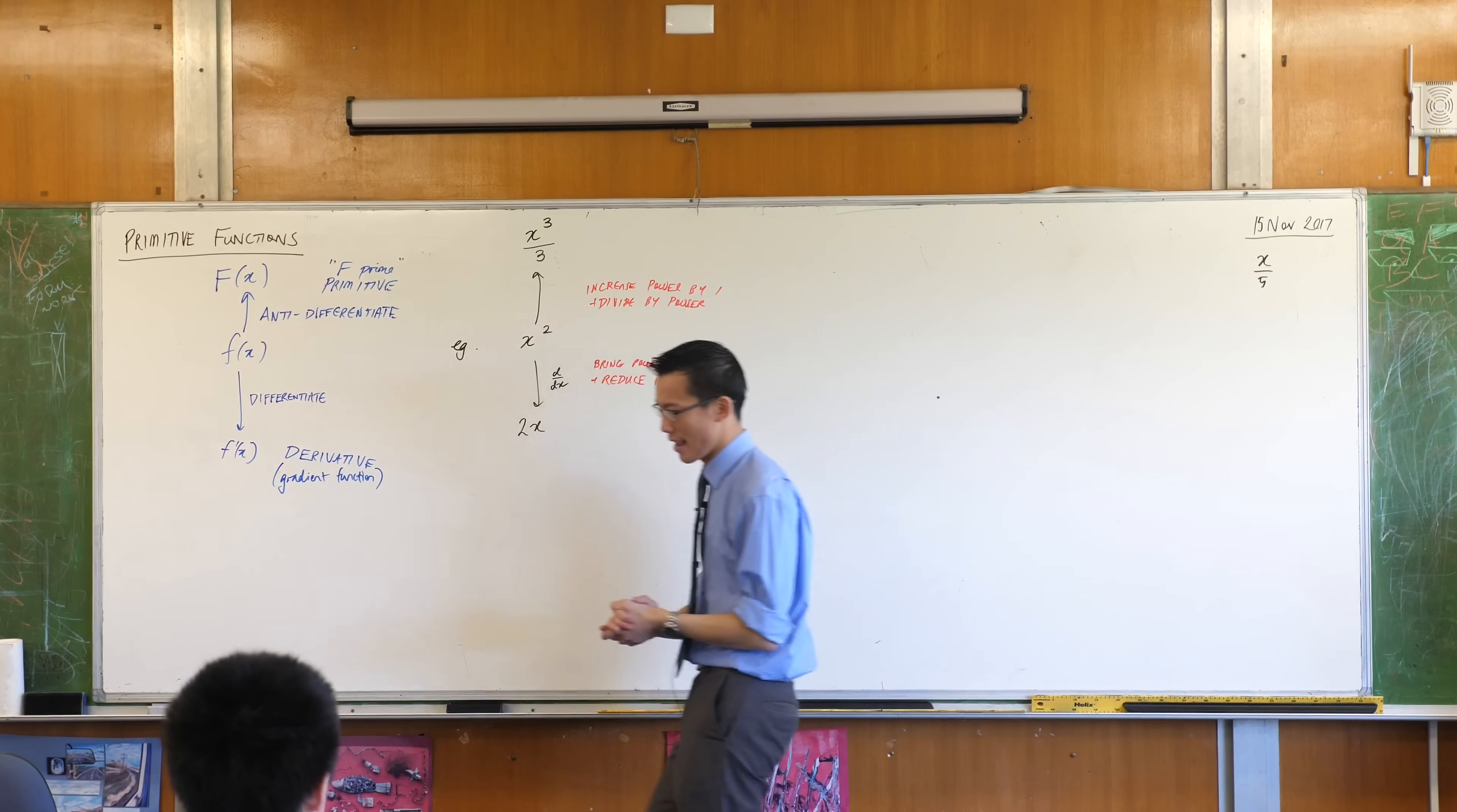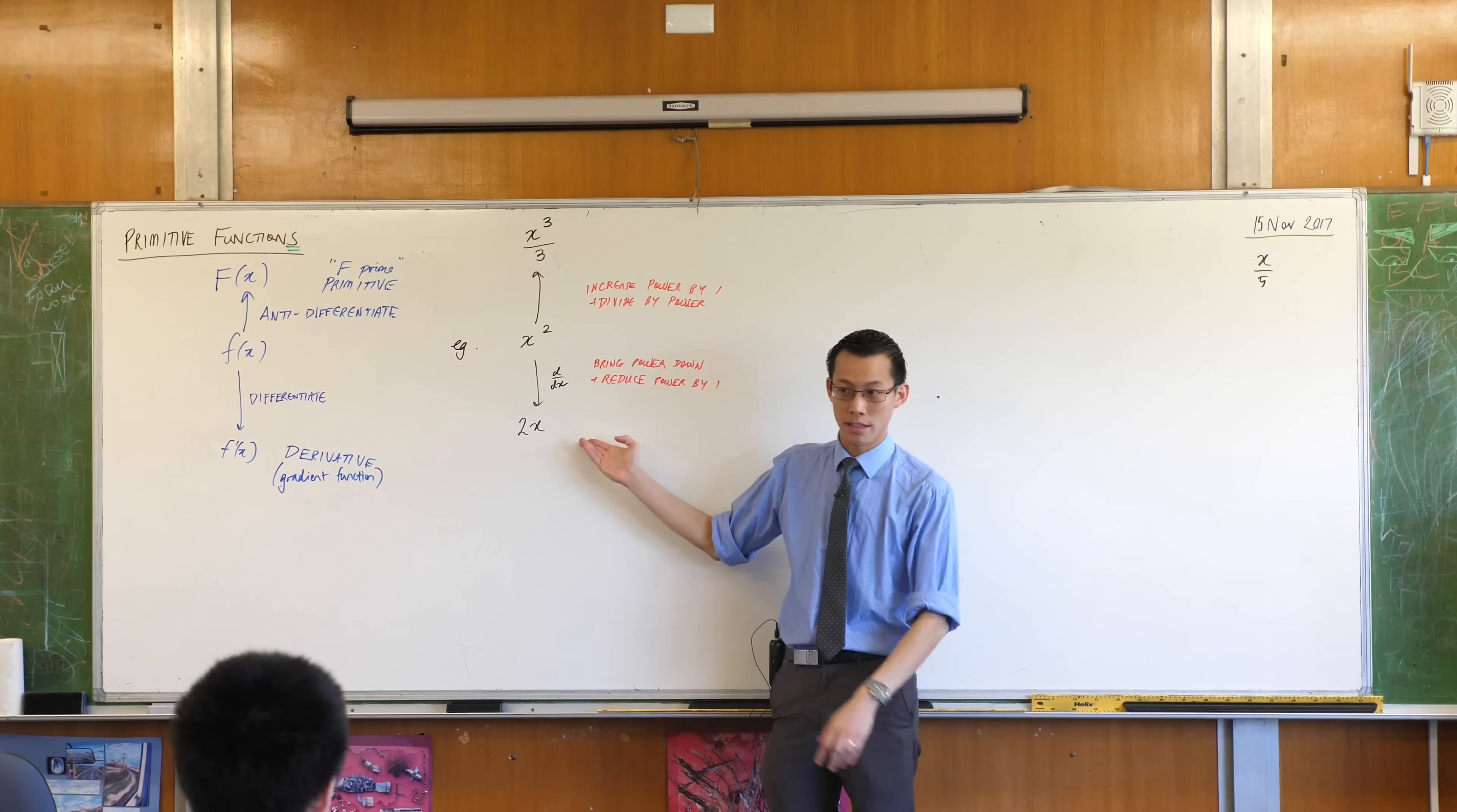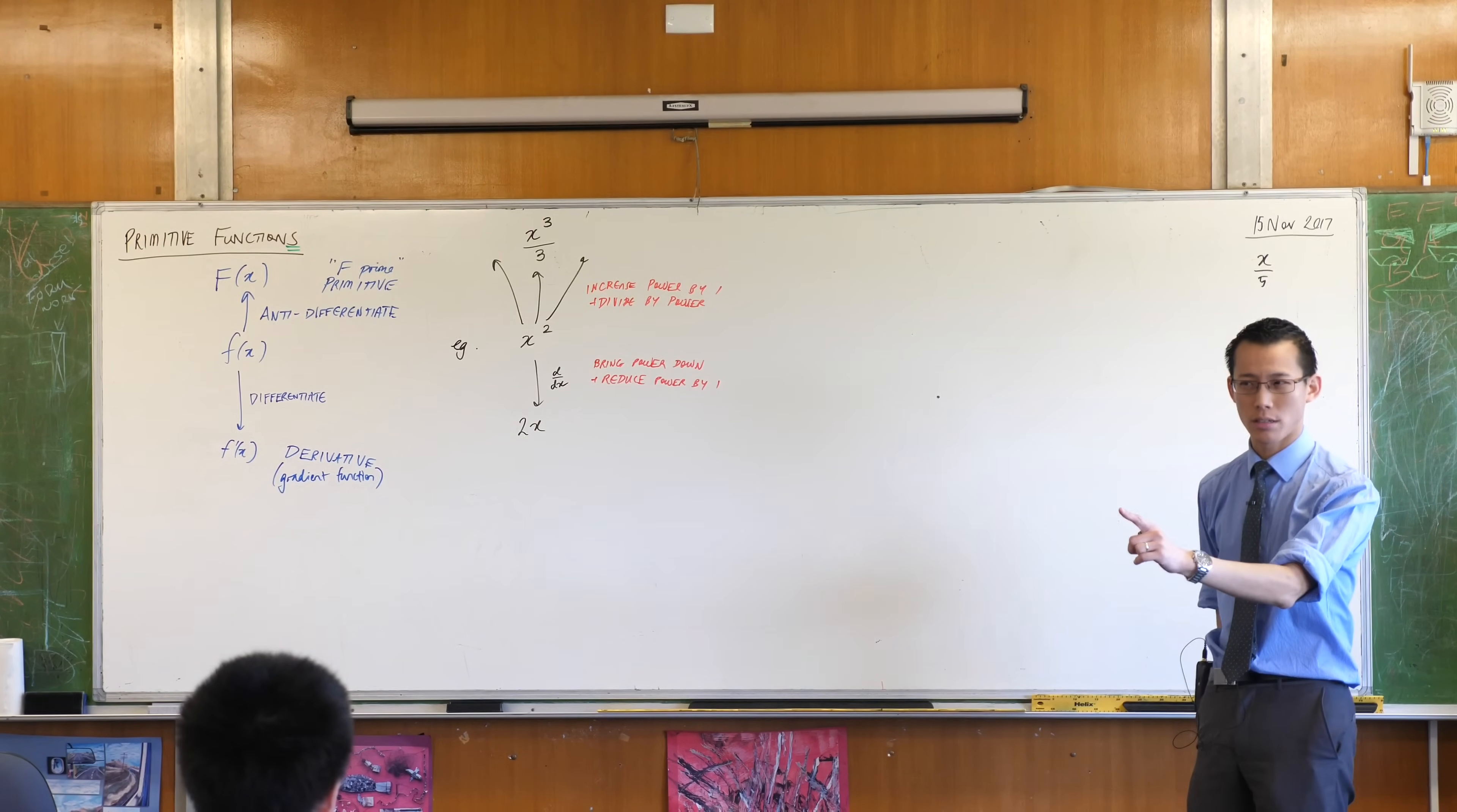But here's the weird part, and here is why my title and your title has a plural on it. Functions have derivatives. One function has one derivative and only one. Like, this has to be the answer. There's no other derivatives that it could possibly be. But when it comes to primitives, there are actually many other things that we could have started from that when you differentiate will still land you on x squared. Think about this.